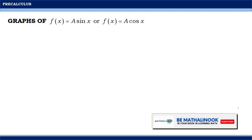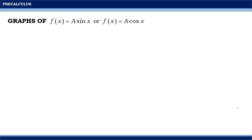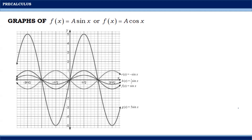This time, let us discuss the graphs of f(x) = a·sine x or f(x) = a·cosine x, where a is a real number. Consider the following graph — in this Cartesian plane, you can see four graphs: r(x) = -sine x, h(x) = (1/2)sine x, f(x) = sine x, and g(x) = 5·sine x. We have discussed the graph of f(x) = sine x earlier. Now we will compare the graphs of r(x), h(x), and g(x) to the graph of f(x) = sine x.